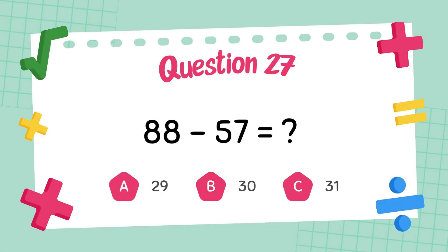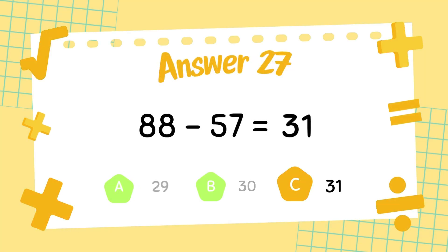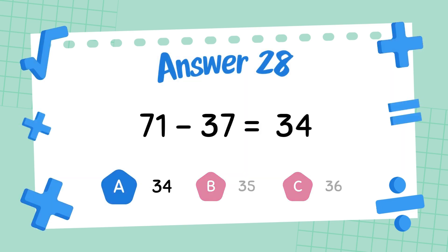What is eighty-eight minus fifty-seven? The answer is thirty-one. What is seventy-nine minus thirty-seven? The answer is thirty-four.